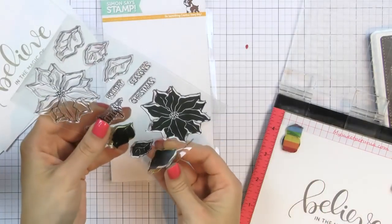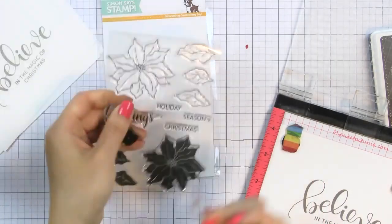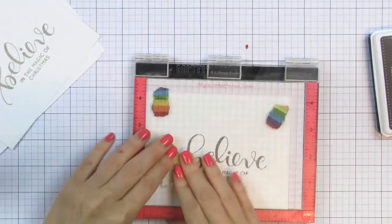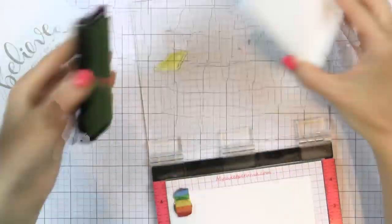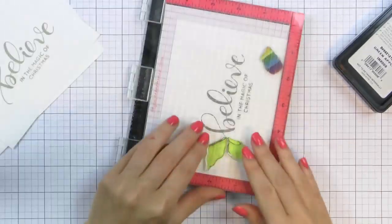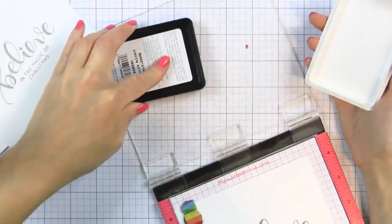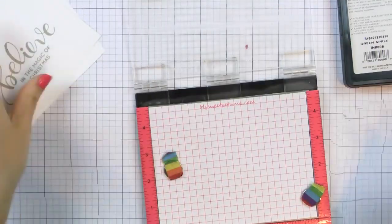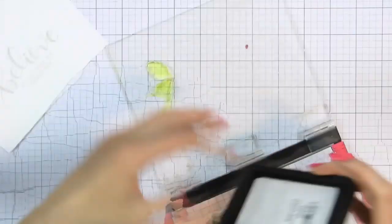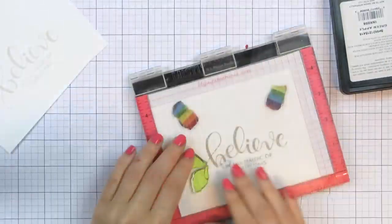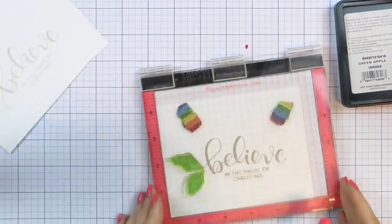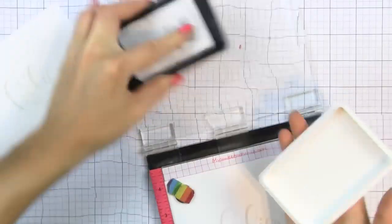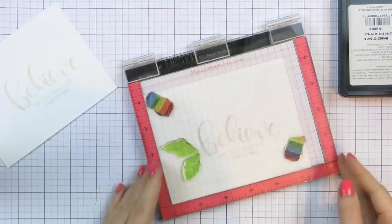Next I picked two solid leaves from the poinsettia stamp set and I mounted those next to the stamped sentiment. There are solid and outline leaf images in that stamp set, so you could stamp both of them, have a black outline and a green solid color for the inside of the leaf. You could also just stamp the outline and color the leaf using whatever coloring medium you like, or do like I'm doing here and stamp just the solid part of the leaf using green ink, Green Apple for these.